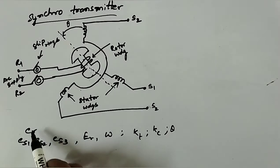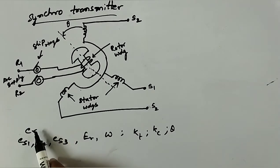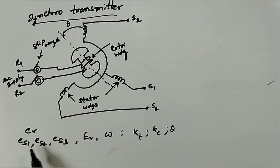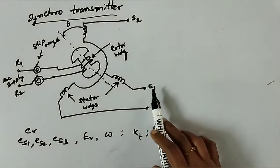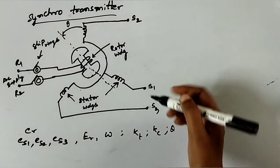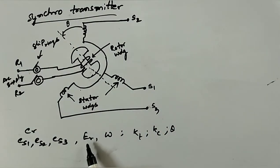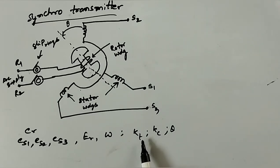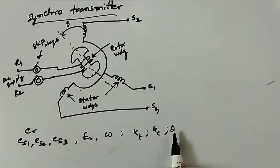Let's define terms. ER is the instantaneous value of AC voltage applied to the rotor. ES1, ES2, ES3 are the instantaneous values of EMF induced in stator coils S1, S2, and S3 with respect to neutral. ER_max is the maximum value of rotor excitation voltage. Omega is the angular frequency of rotor excitation voltage. KT is the turns ratio of stator to rotor windings. KC is the coupling coefficient, and theta is the angular displacement of the rotor with respect to reference.